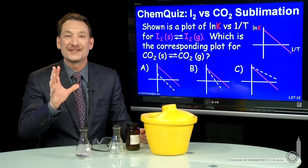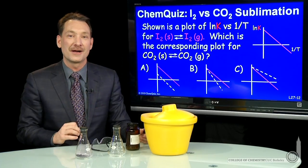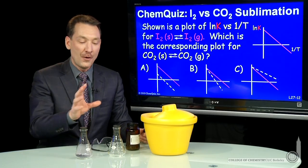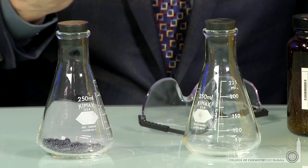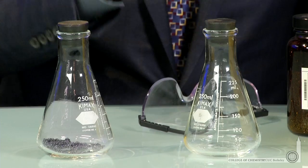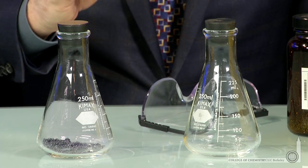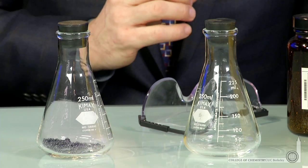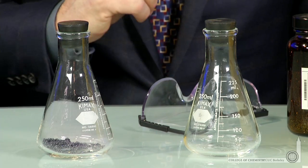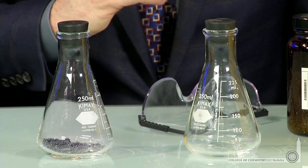We're talking about the sublimation of iodine and carbon dioxide. Now you may know solid carbon dioxide, dry ice, isn't commonly found at room temperature. It has a relatively low sublimation temperature and a low enthalpy of sublimation compared to iodine, which does exist as a solid at room temperature.